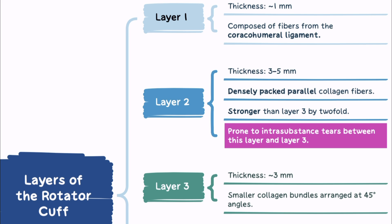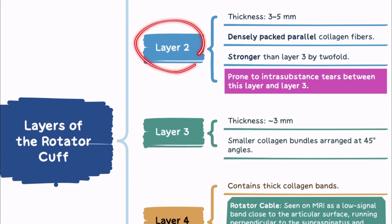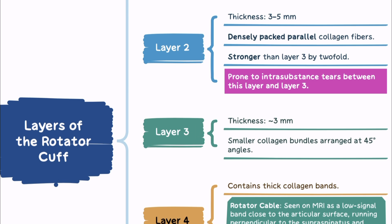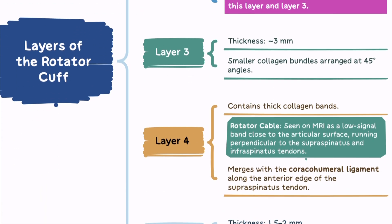Among these layers, layer 2 and layer 3 are particularly significant, while layer 1 and layer 4 are associated with the coracohumeral ligament, and layer 5 corresponds to the joint capsule.